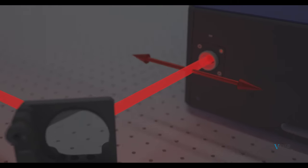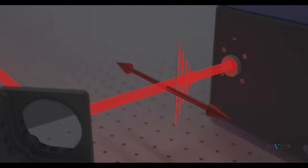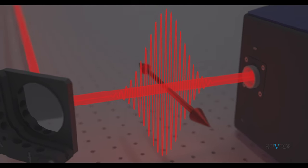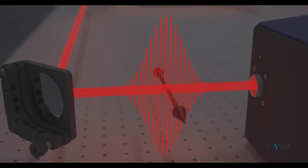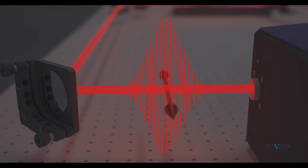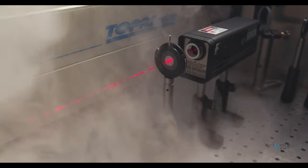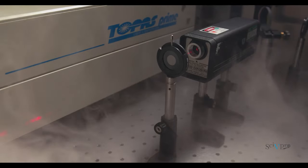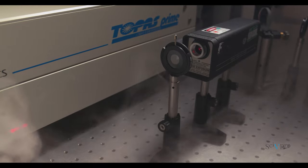In this setup, a titanium sapphire amplified laser produces 40 femtosecond optical pulses at a central infrared wavelength of 800 nanometers. For illustration purposes, here we show a red laser commonly used for optics alignment.